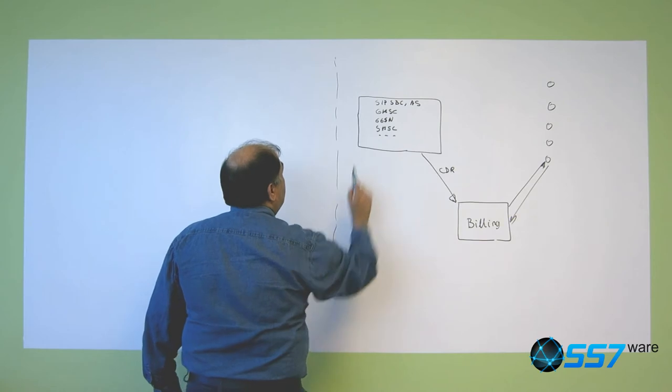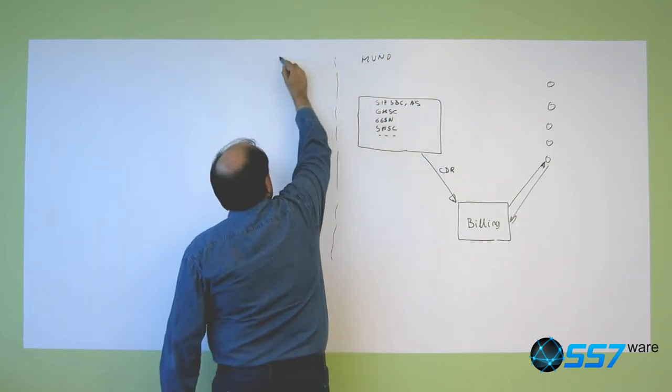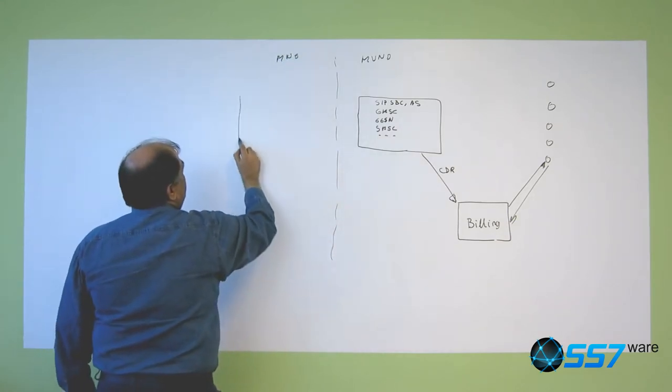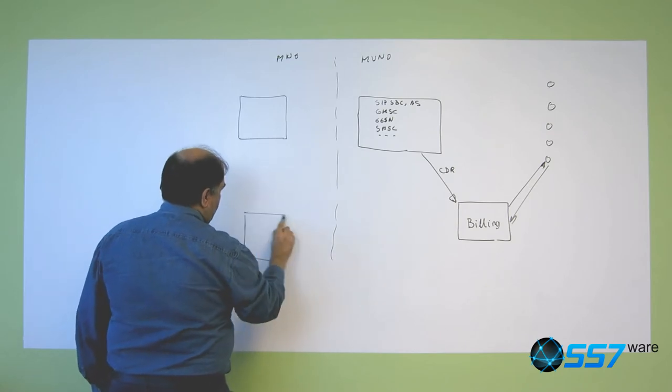And we have the limit here. We have the MVNO and we have one or more MNOs here. We also have some equipment and some business systems.